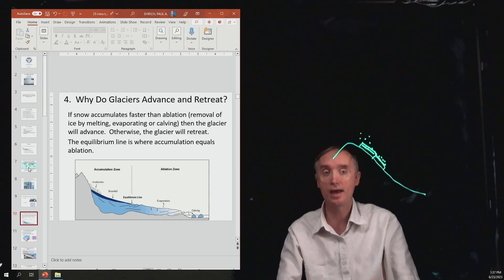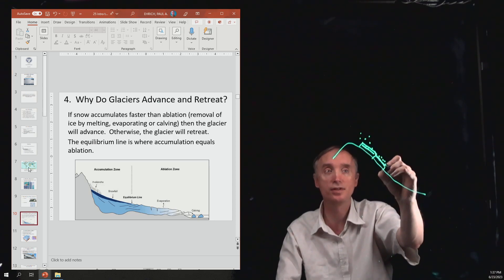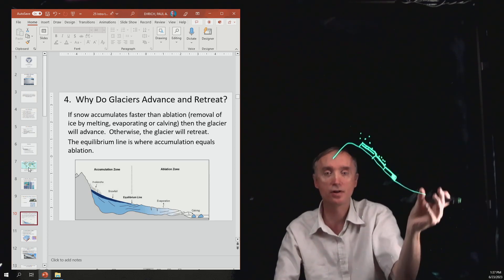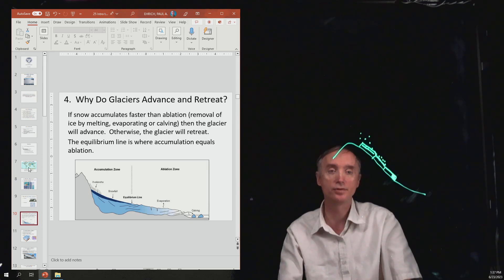Glaciers can also calve. That means that let's say now that the glacier is down to here and then this part breaks off. This part of the glacier actually breaks off, and we call that calving when that happens.